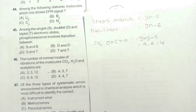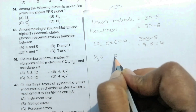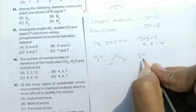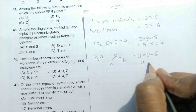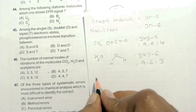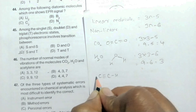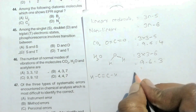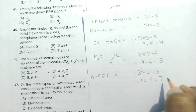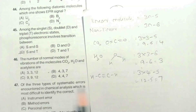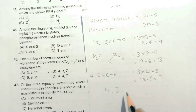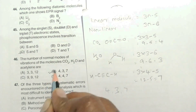H2O is a bent (non-linear) molecule, so the formula is 3n−6: 3(3)−6 = 9−6 = 3. H2O has 3 normal modes of vibration. Acetylene is a linear molecule with 4 atoms: 3(4)−5 = 12−5 = 7. Acetylene has 7 normal modes of vibration. So the answer is 4 for CO2, 3 for H2O, and 7 for acetylene — option B is correct.